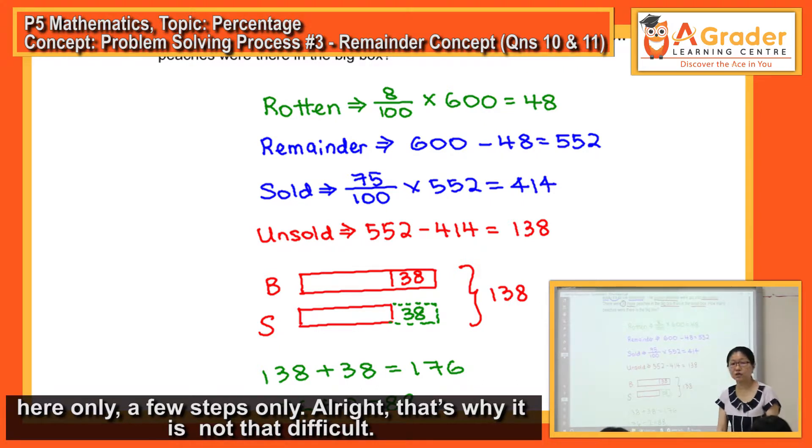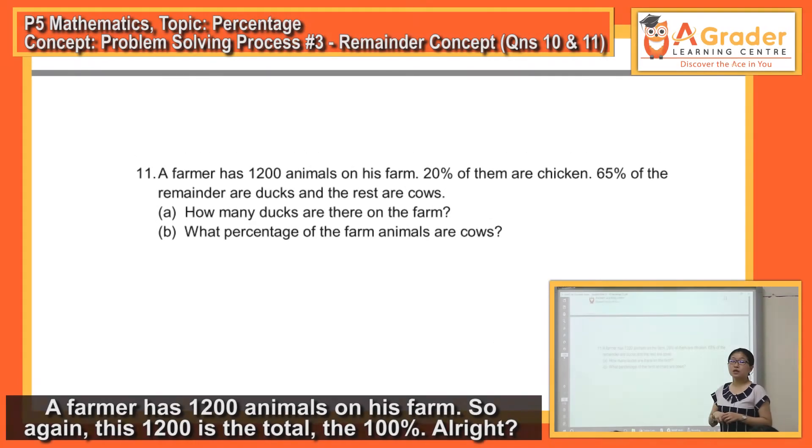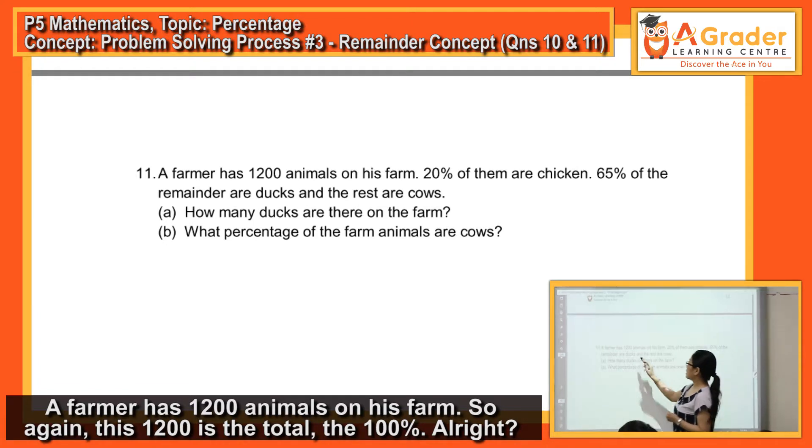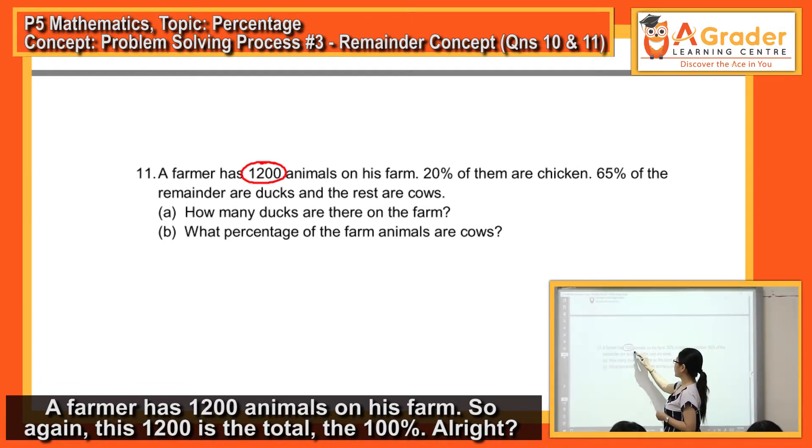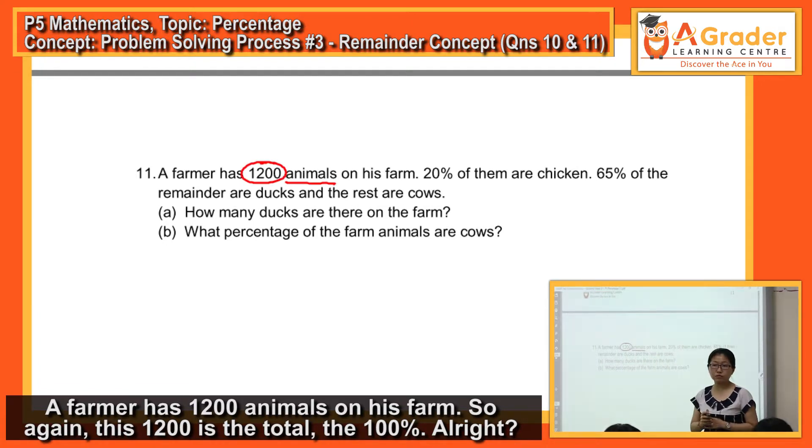Okay, now the last one that we're gonna do. Okay, a farmer has 1200 animals on his farm. So again, this 1200 is the total, the hundred percent.